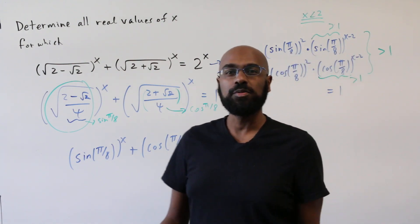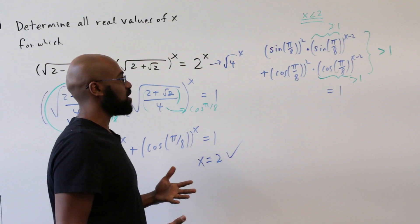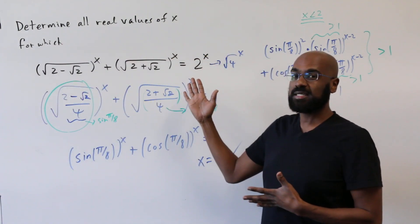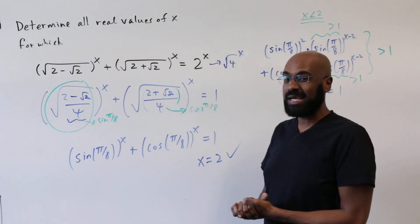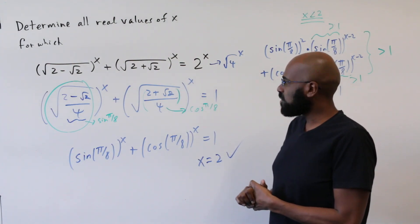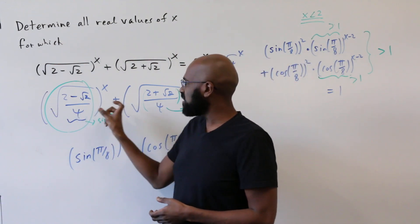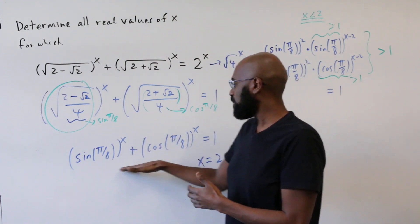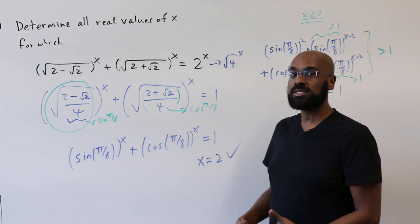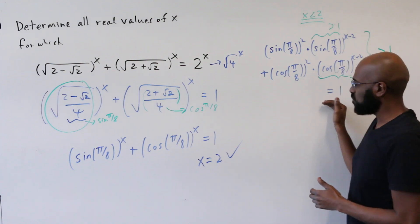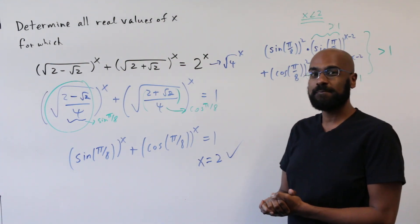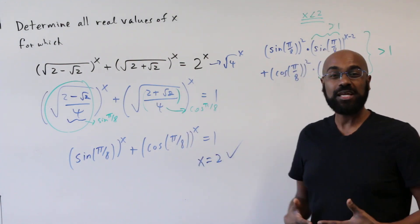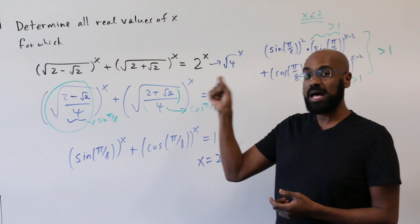So this is an interesting problem that illuminates two completely different approaches. One: analyzing this as a function of x to figure out what values make the equation hold. Another: recognizing that the arguments look trigonometric and exploiting that to represent this as a trigonometric equation. I hope you enjoyed today's video — if you did, click the like button and subscribe to the channel if you'd like to see more videos like this.